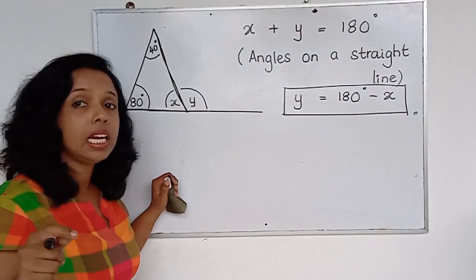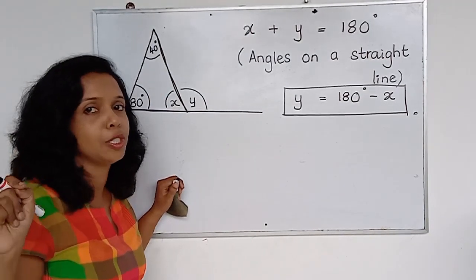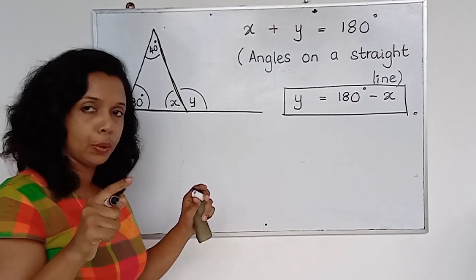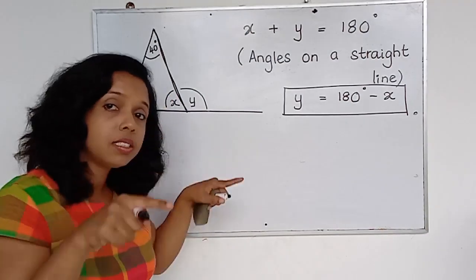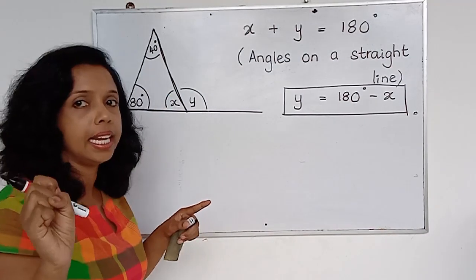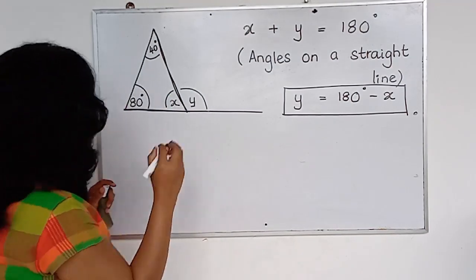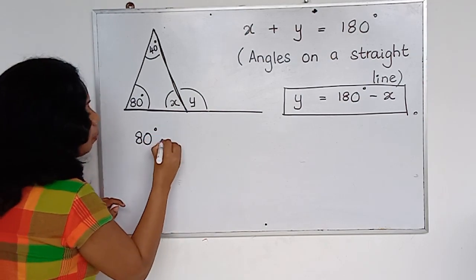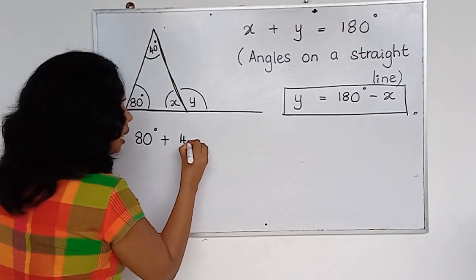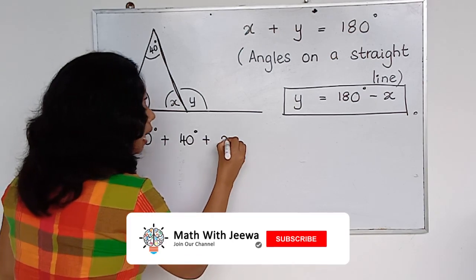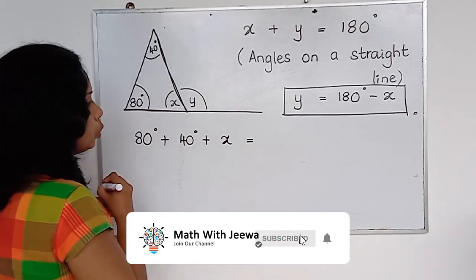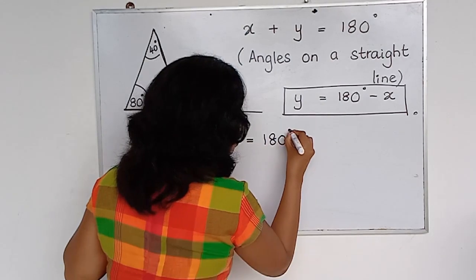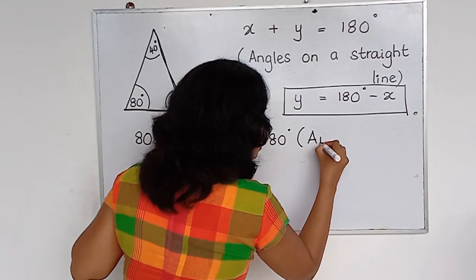Now think about the theory we learned today. In this triangle we have three angles. Angles in a triangle add up to 180, so: 80 plus 40 plus x equals 180. The reason: angles in a triangle add up to 180.